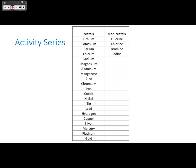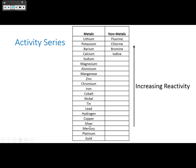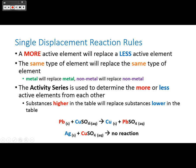The higher up you are in the activity series, the more active or reactive you are. Looking at the copper and silver example: copper is above silver, so silver cannot displace copper. But lead is above copper, so lead can displace copper — which is why those reactions occur.